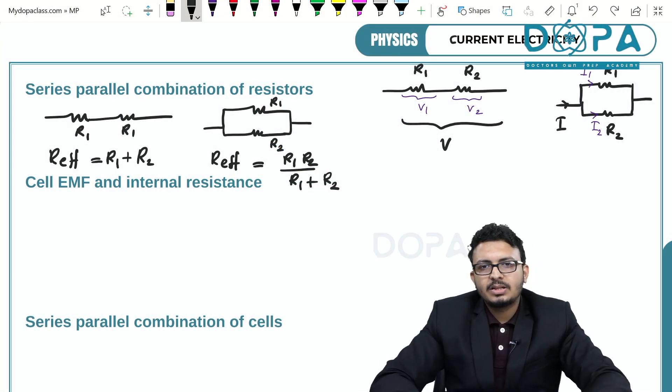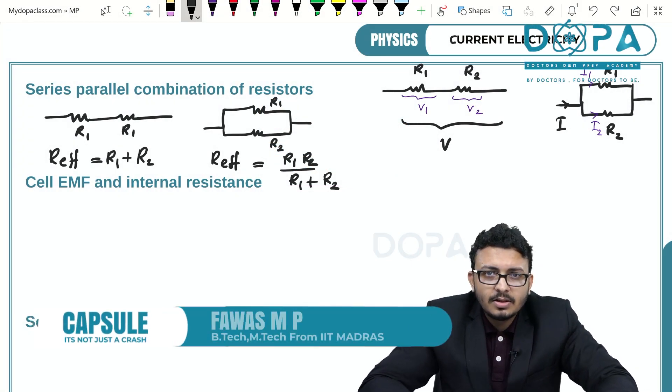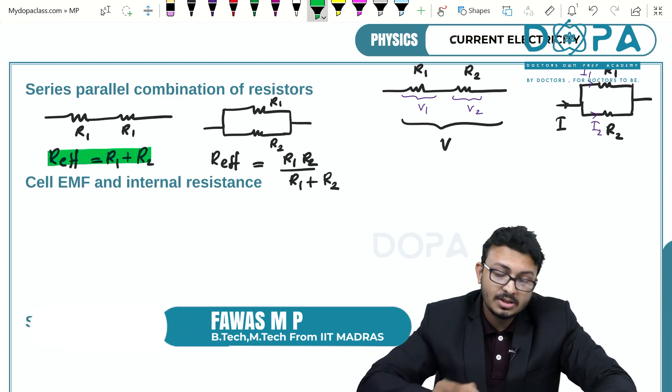Hello students. What is the effective resistance if we connect two resistors in series? We all know that the effective resistance is R1 plus R2.